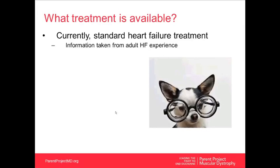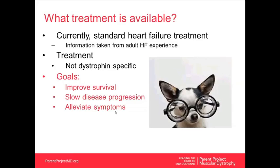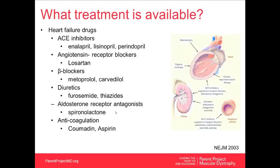What treatments are available? Currently, standard heart failure treatment applies — nothing unique to Duchenne. It's taken from the adult heart failure experience, with goals to improve survival, slow disease progression, and alleviate symptoms. Commonly used drugs include ACE inhibitors, angiotensin receptor blockers such as losartan, beta blockers, diuretics to pull excess fluid off the body, aldosterone receptor antagonists such as spironolactone (Dr. Hoare will discuss an ongoing clinical trial on this), and if the heart is working poorly, anticoagulants like Coumadin or aspirin to reduce clot risk.